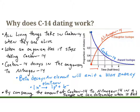Beta decay, to refresh your memory, is when an element emits a high-energy electron. That high-energy electron comes from a single neutron splitting to form a proton and one electron. The proton keeps the mass number the same, the electron gets emitted, and this continues until we reach a much more stable nucleus.